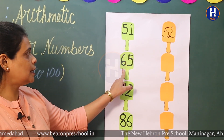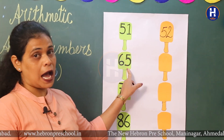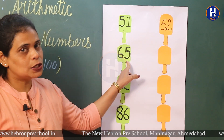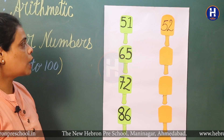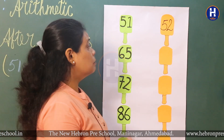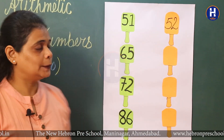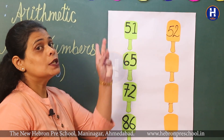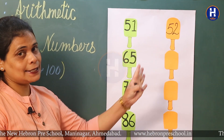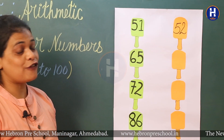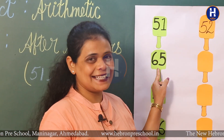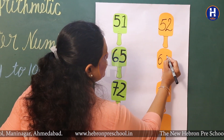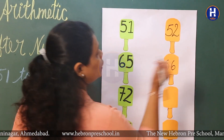Now go to the next number. Which number is this? 65. So let's start forward counting from number 61: 61, 62, 63, 64, 65, 66. Yes! Number 66 is the after number.